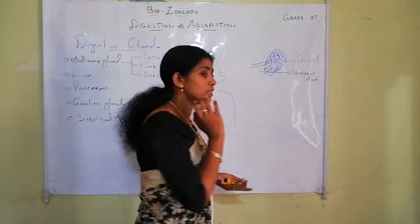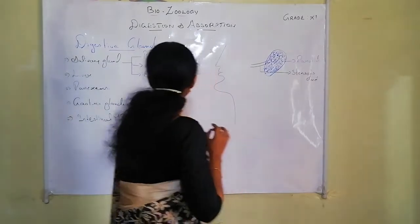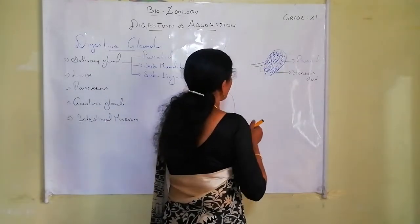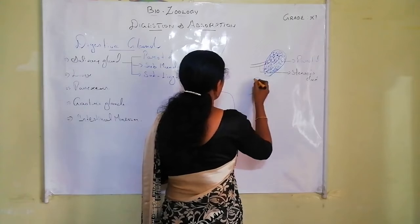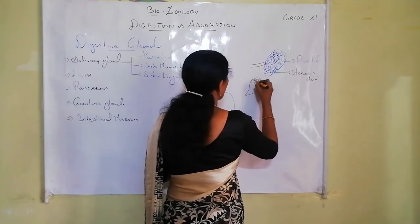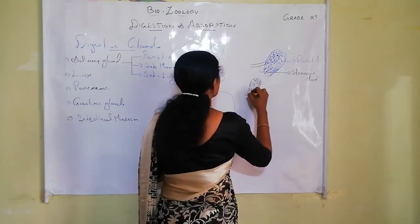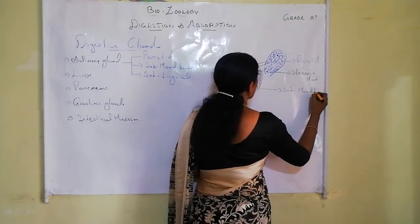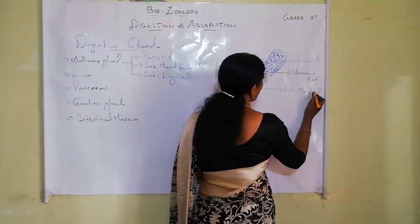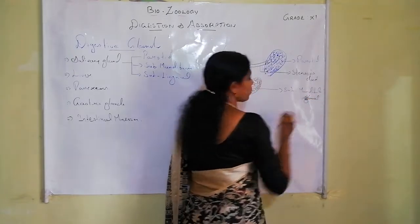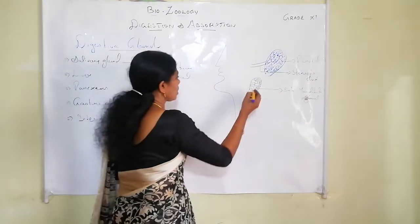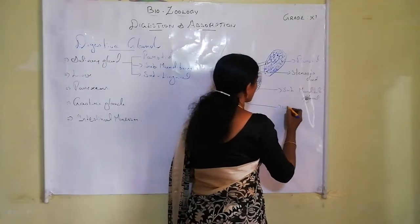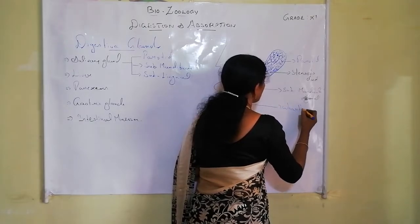The next gland is located in the jaw region — that is why it is called submandibular. It is smaller than the parotid gland, located in the jaw region. Its secretions are carried into the buccal cavity through Wharton's duct.